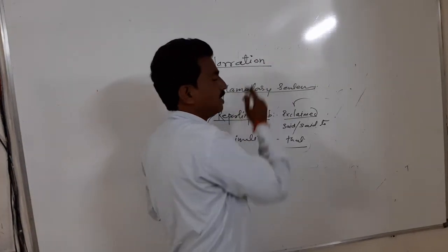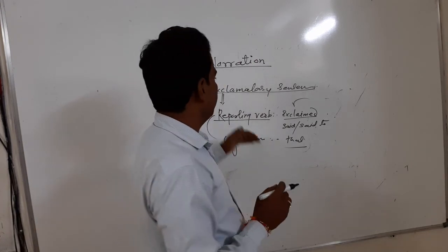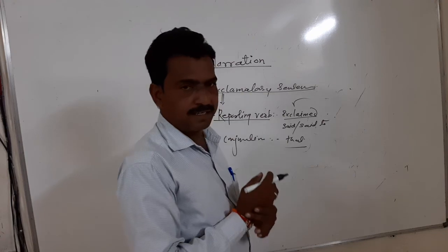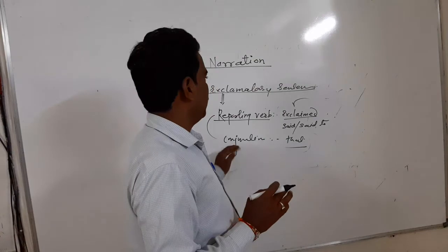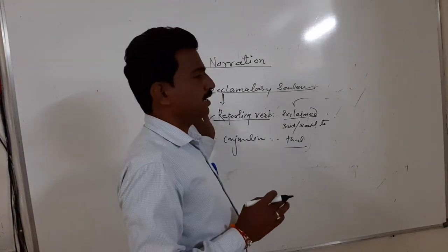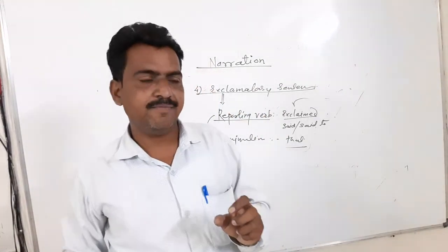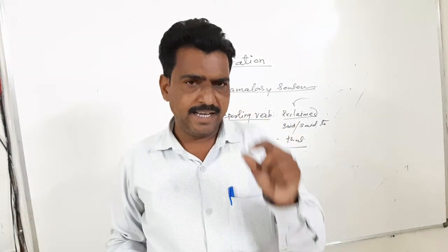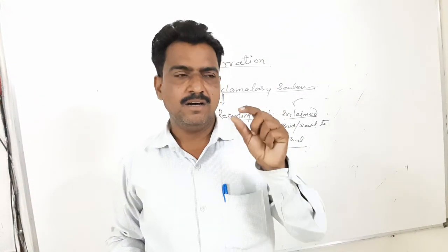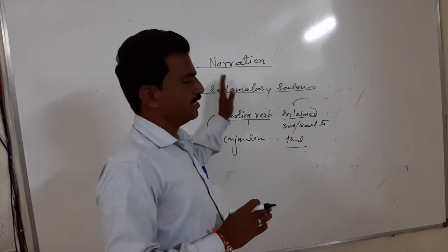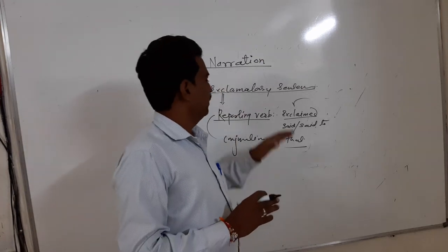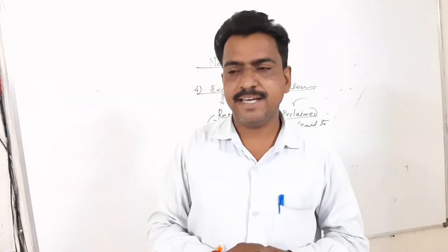Tomorrow we will see other changes — how to change other words. The first changes we have seen are reporting verb and conjunction; the second changes will be how to change other words. After that we will see examples. Students, whatever we have completed — the kind of sentences, the types and rules — please reference whatever examples are given in the text and solve them. If there is any difficulty, ask me. Thanks.